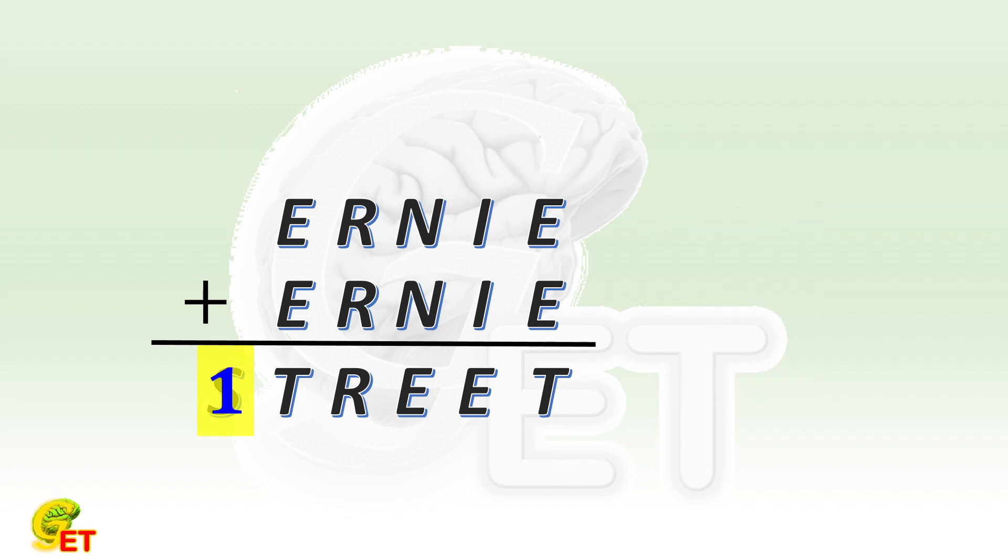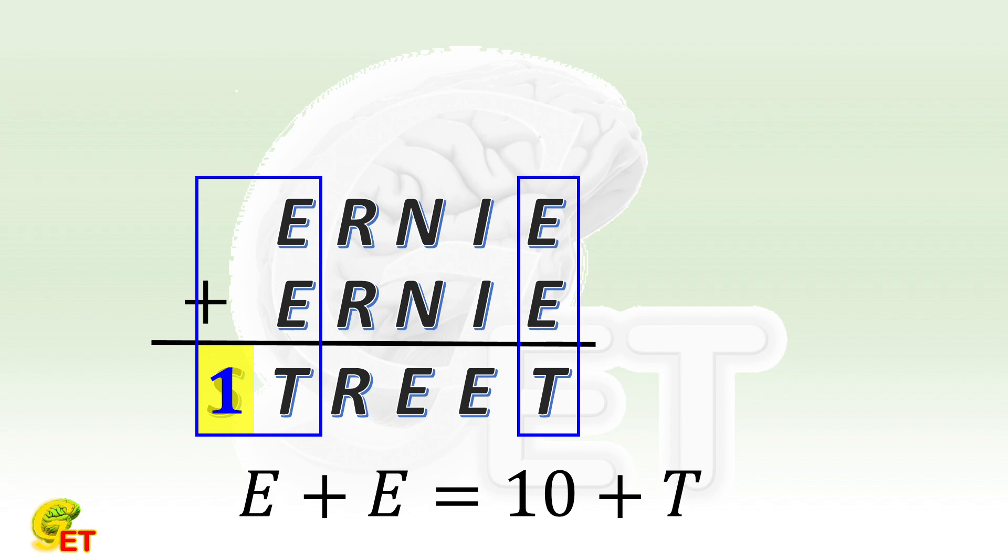The last place tells us that the one's digit of the summation of 2E is T. And this place tells us that this summation is actually 10 plus T. In addition, there is no carry from the next place.